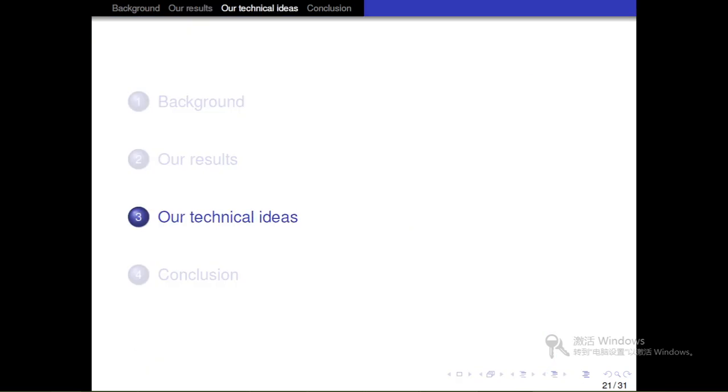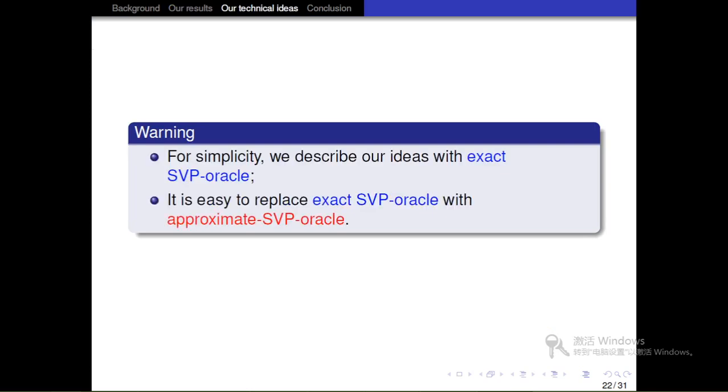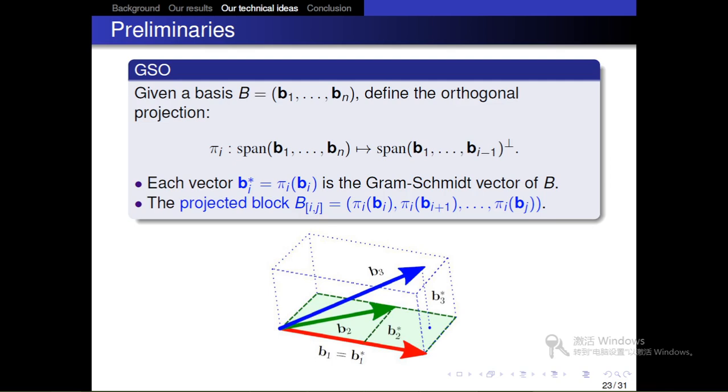Okay, so now I want to show you our technical ideas. For brevity, I just describe our technical ideas with SVP oracle. Yet, it's easy to replace SVP oracle with a positive HSVP oracle. We now recall some basic notions. The first one is Gram-Schmidt orthogonalization. For a basis B equal to b1 to bn, let us usually use the orthogonal projection pi. Each vector bi star equal to pi of bi is a Gram-Schmidt vector of b. We use big B tilde to denote the projected block pi of bi to pi of bj.